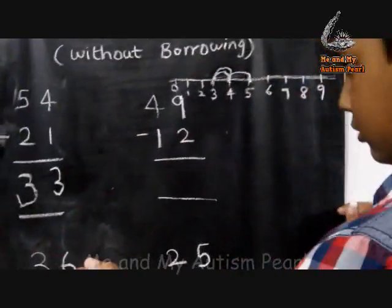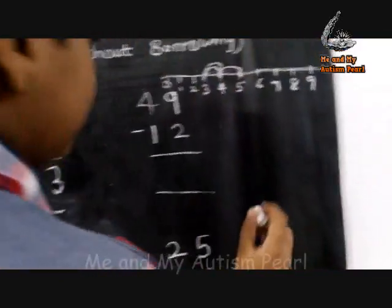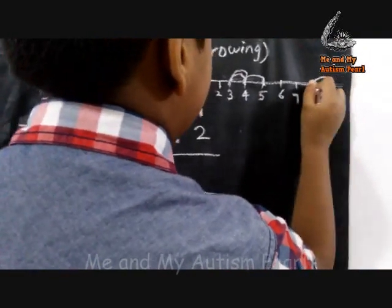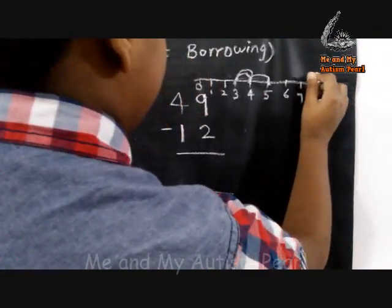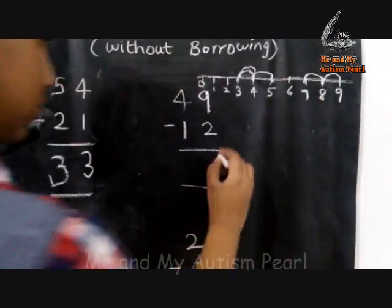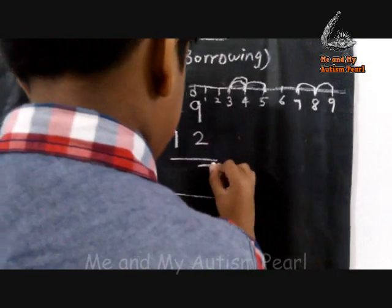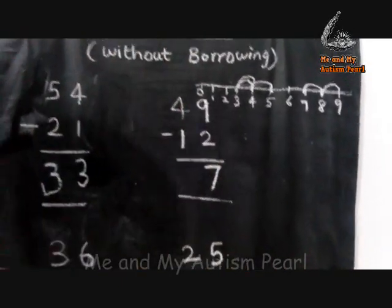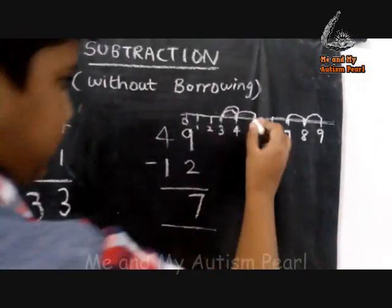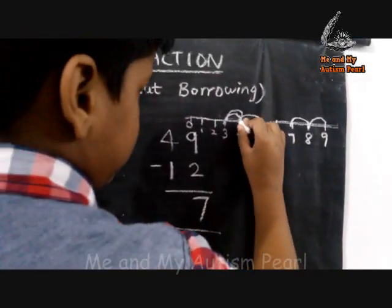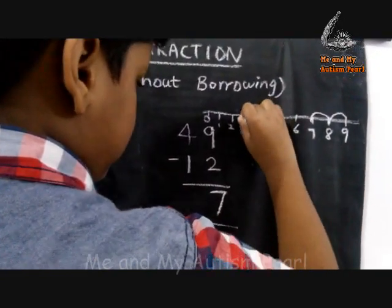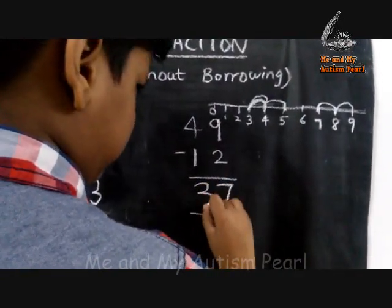Nine minus two. Nine, count back: one — eight; two — seven. So the answer is seven. Four minus one is equal to three.